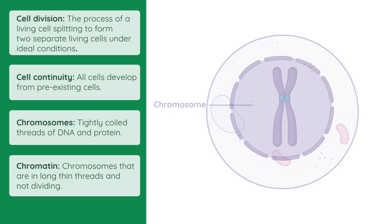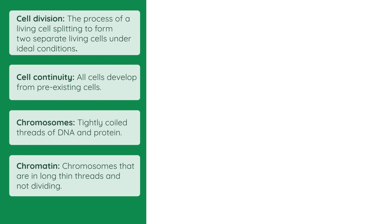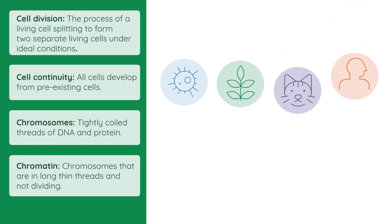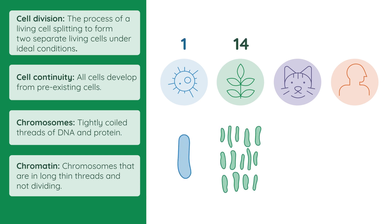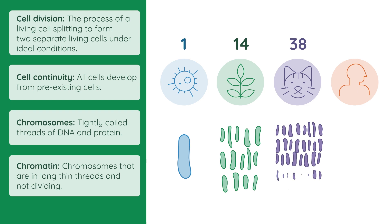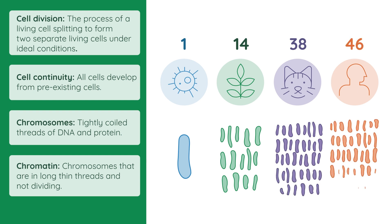All species on Earth have their own specific number of chromosomes. For example, bacteria have just one chromosome, pea plants have 14, cats have 38, and human body cells have 46 chromosomes.